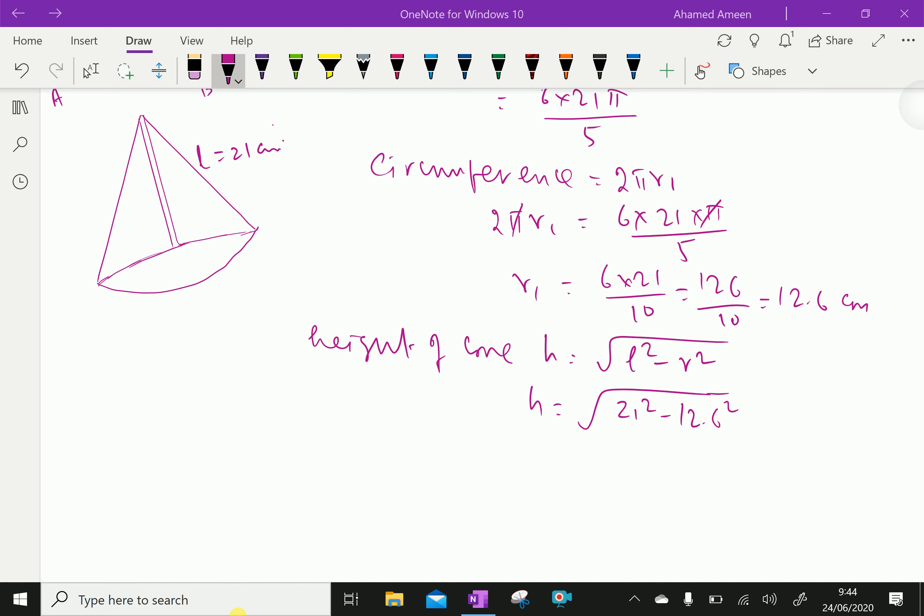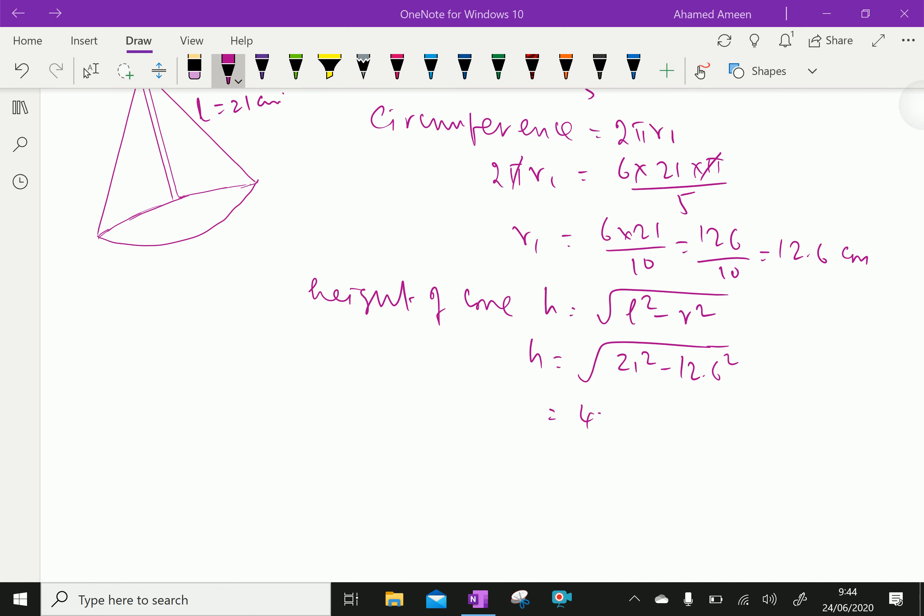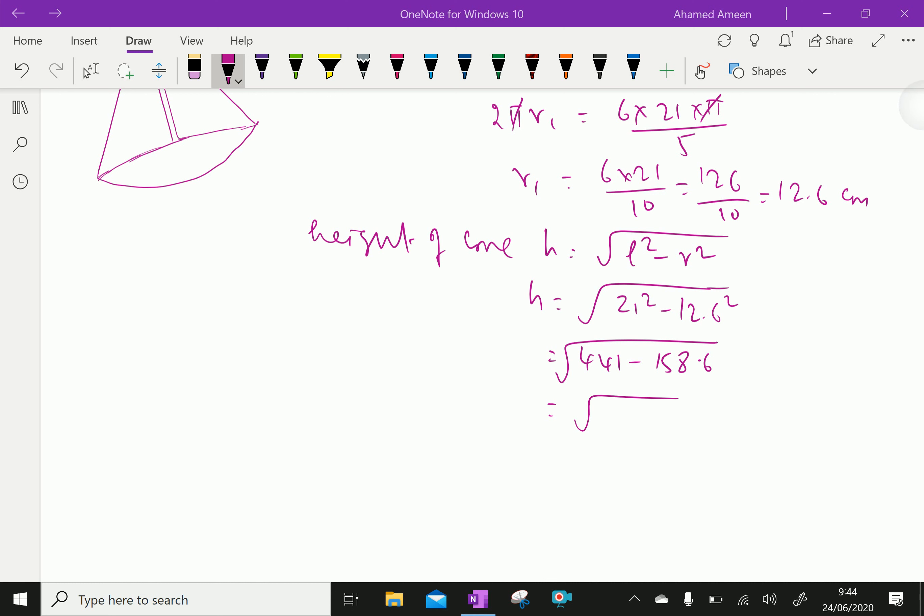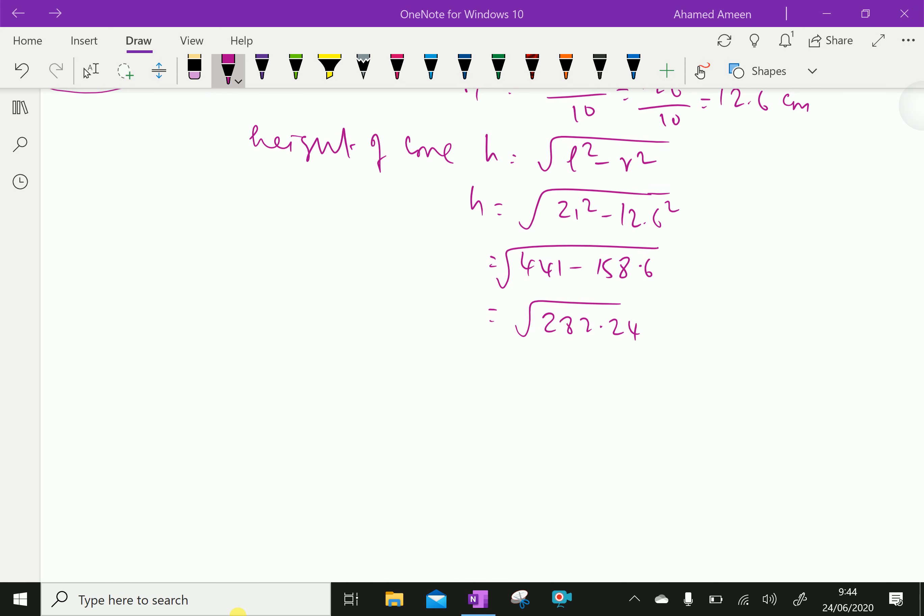21 square equal 441 minus 12.6 square is 158.76. After subtracting, we get 282.24. Now, we have to find the square root of 282.24, approximately we have to find the square root of 282.